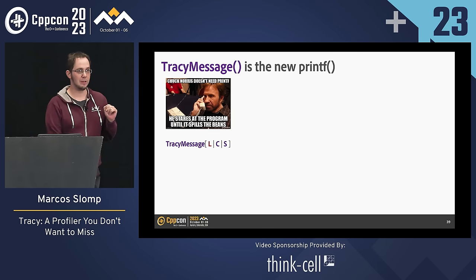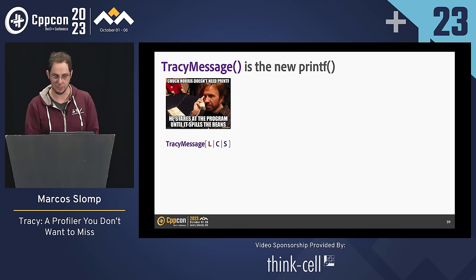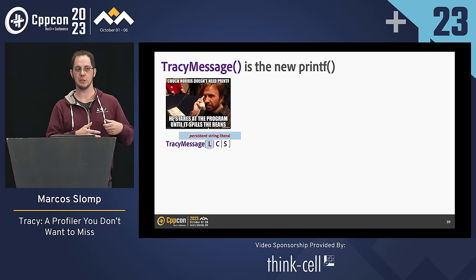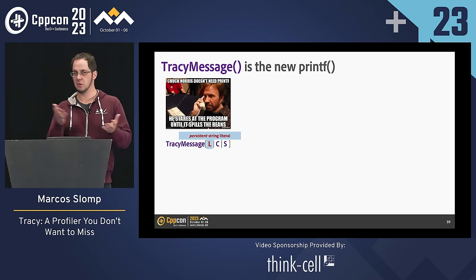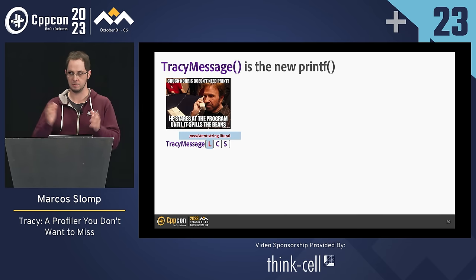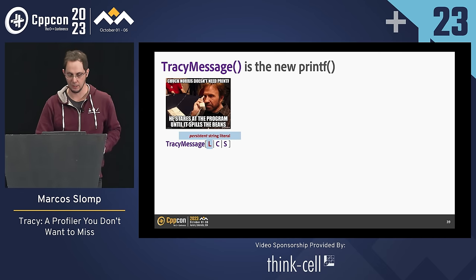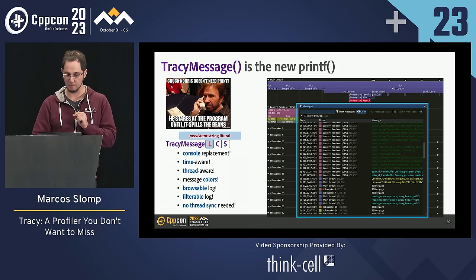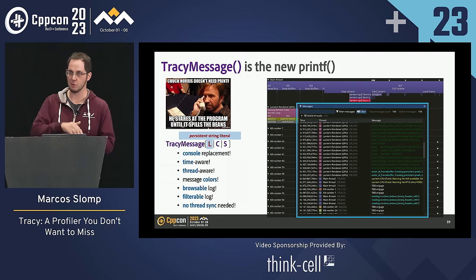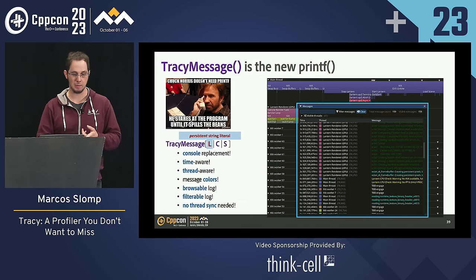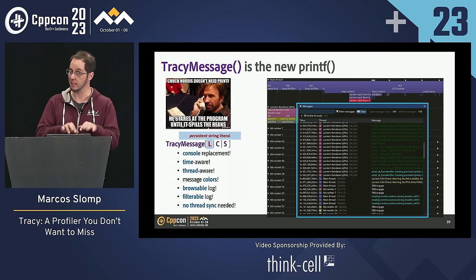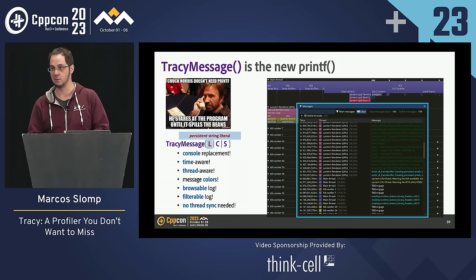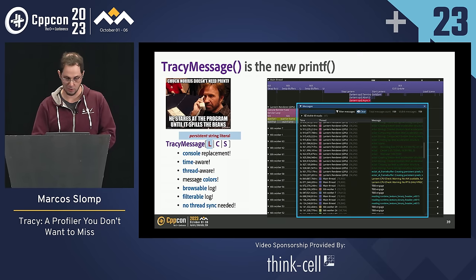Another very transformative Tracy feature is logging messages. TracyMessage is basically a console replacement for me. When you use it, you get information about the time, which thread the message came from, and you can give it a color. You can browse the log, filter it by typing, choose which threads you want to see messages from, and you don't need to worry about thread synchronization like you would when logging to a file or console. The L version — TracyMessageL — is for non-persistent static strings as a shortcut.